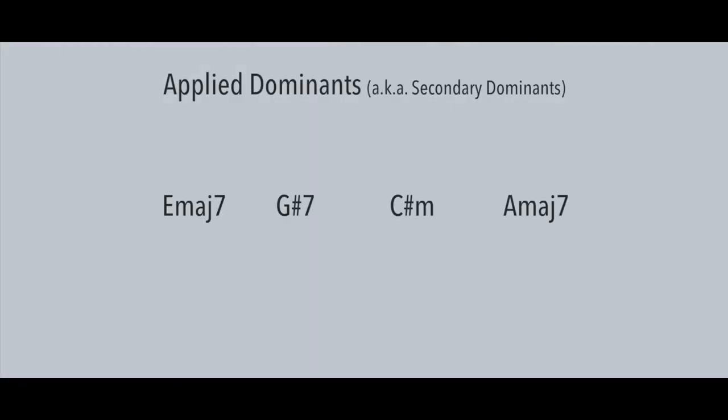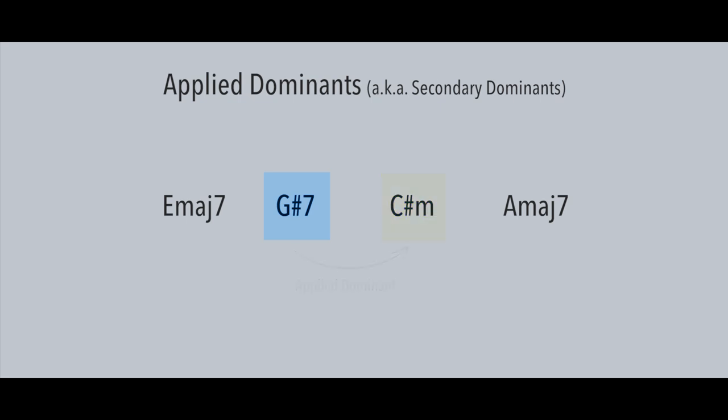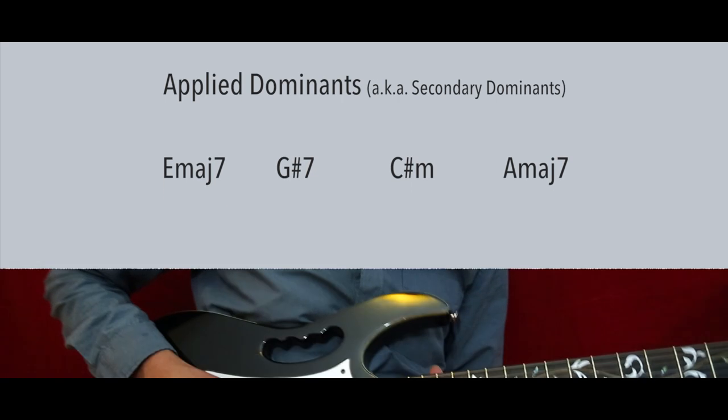Take a look at this chord progression: E major 7, G sharp 7, C sharp minor, and A major 7. The G sharp 7 is the applied dominant for the C sharp minor chord. Over the G sharp 7 chord, we can use a G sharp Phrygian dominant scale.